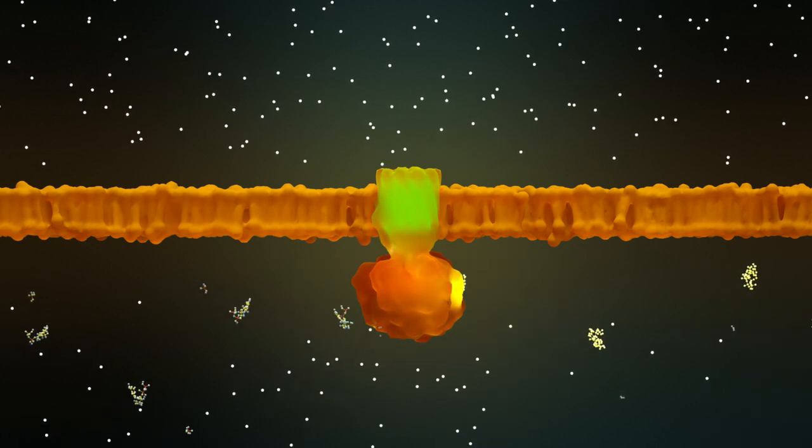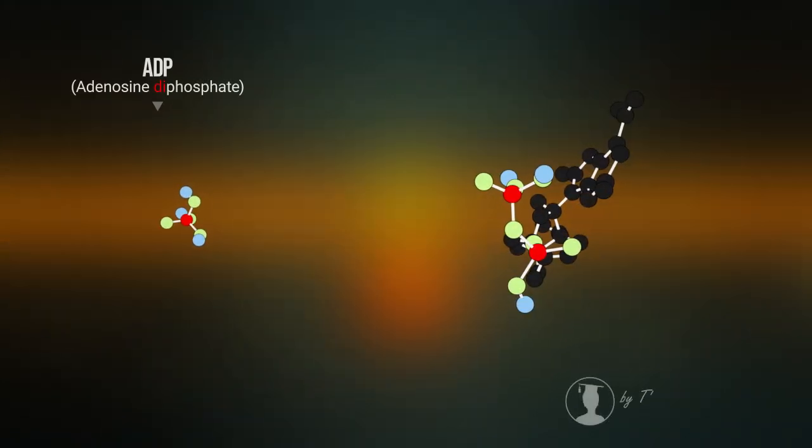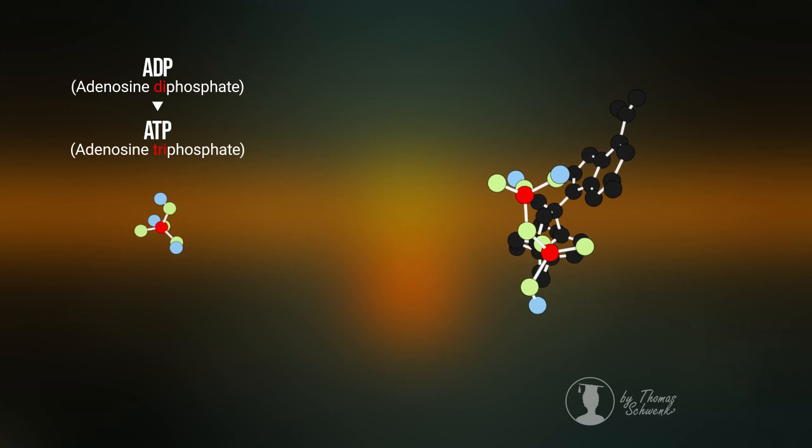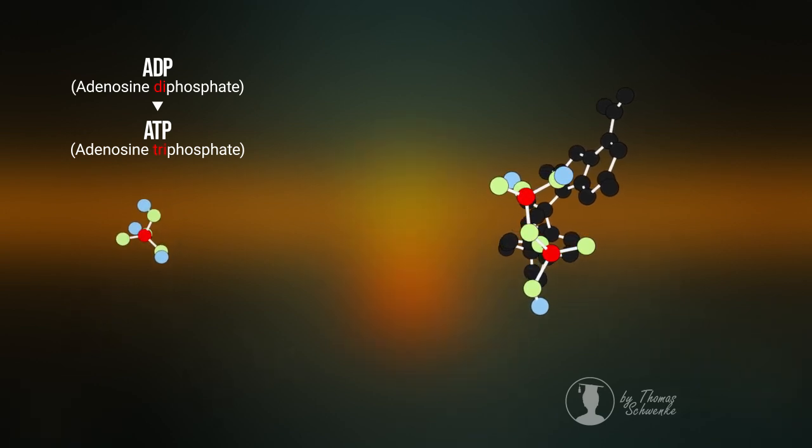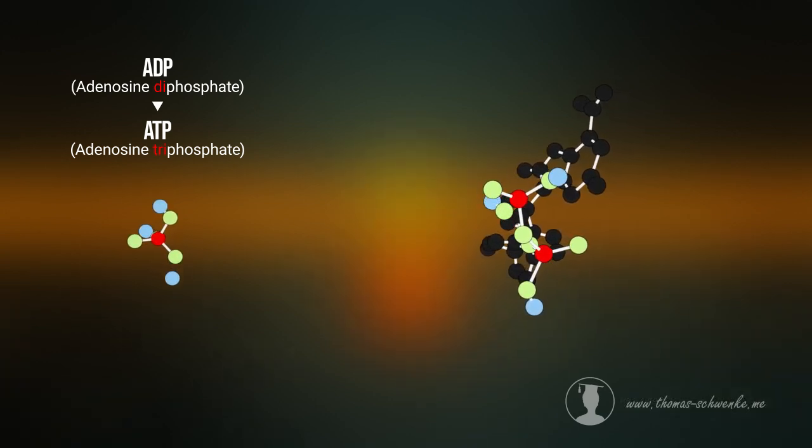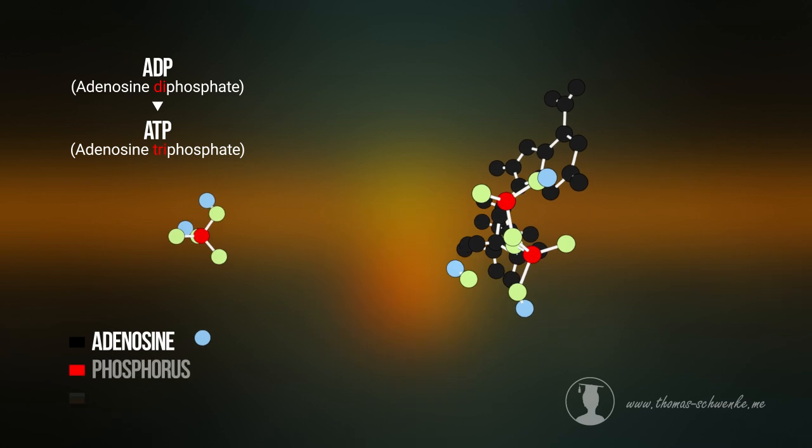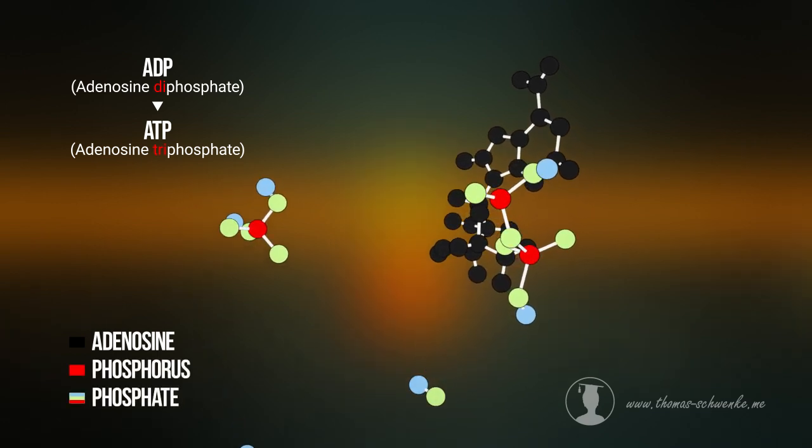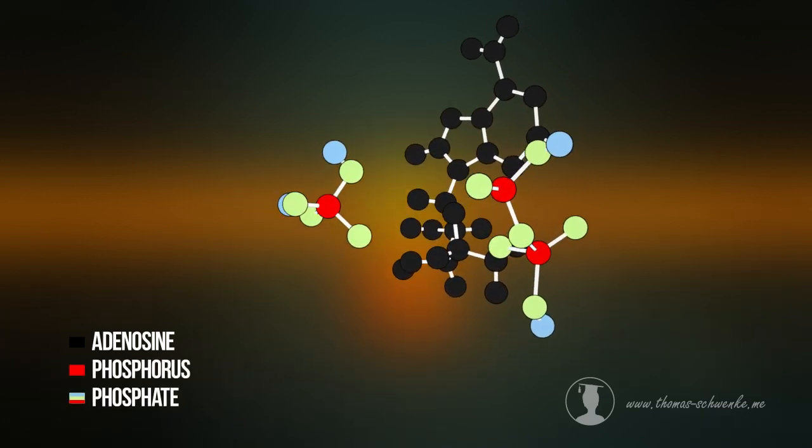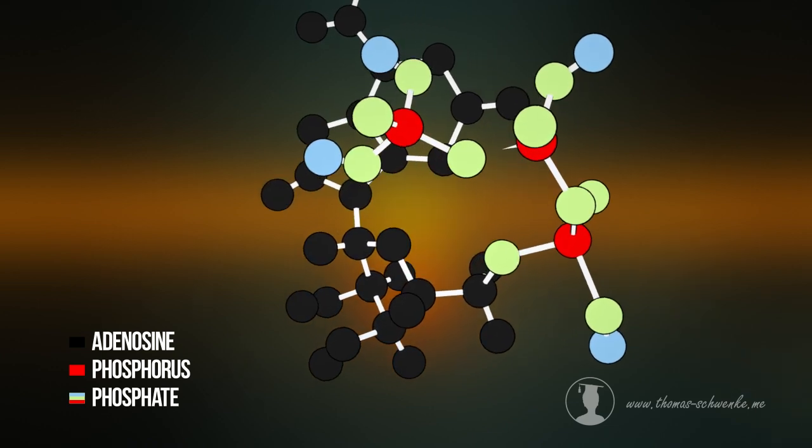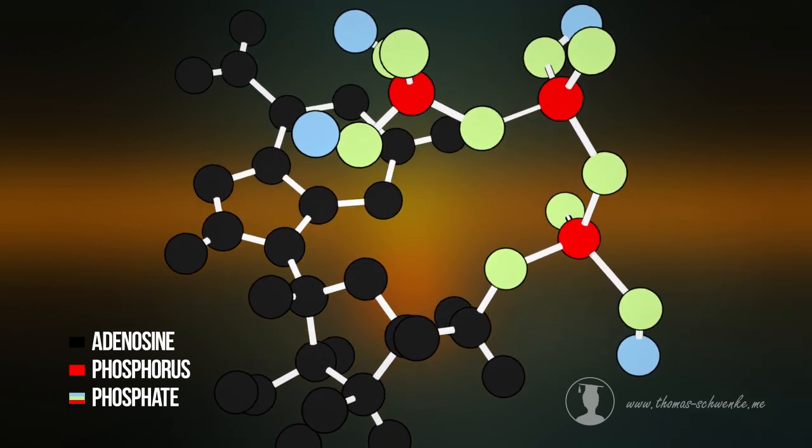The reaction inside the ATP synthase is very easy to understand. In several steps, adenosine diphosphate with two phosphate groups is converted into adenosine triphosphate with three phosphate groups. The result is an energy-rich molecule with three phosphorus atoms.